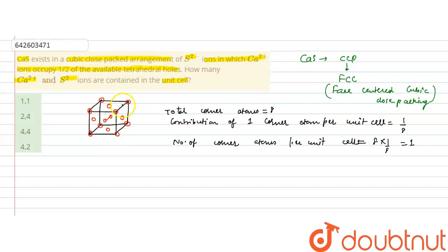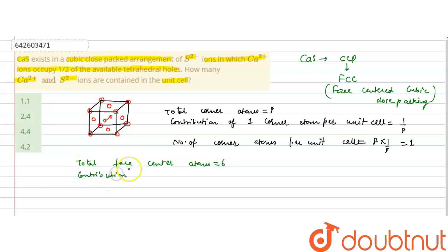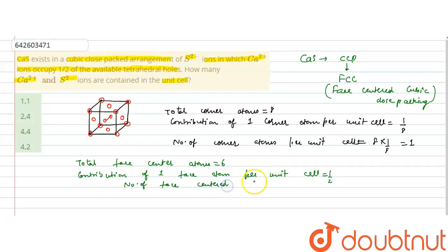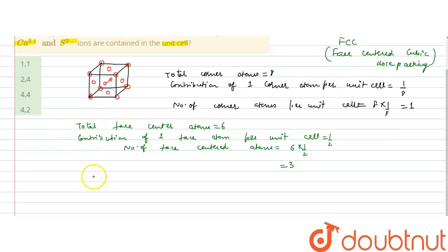At each face center, one atom is present and its contribution to one unit cell is one-half, because it is shared by another unit cell. Total face-center atoms are six — since there are six faces of the cube — and contribution of one face atom per unit cell is one-half. So total face-centered atoms = 6 × (1/2) = 3. Total atoms in CCP/FCC arrangement = 3 + 1 = 4.